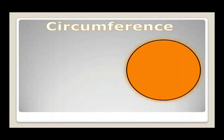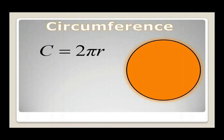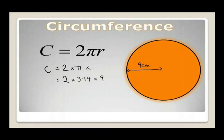Next we will look at the circumference. The circumference is the same as the perimeter of the circle — it is the distance around the outside. The circumference equals 2πr. It is just a matter of substituting in the values. Say the radius is 9 cm: circumference = 2 × π × 9 = 2 × 3.14 × 9 = 56.55 cm.